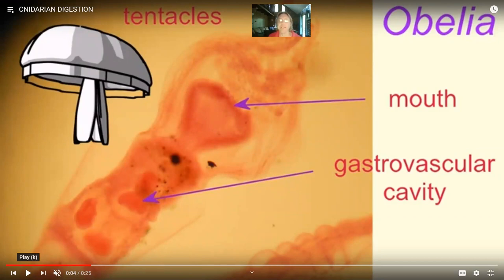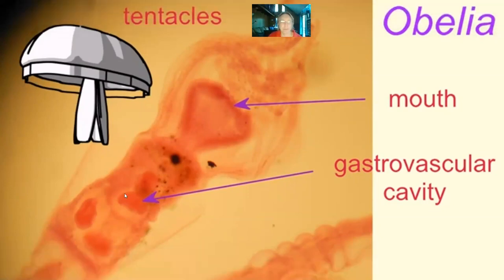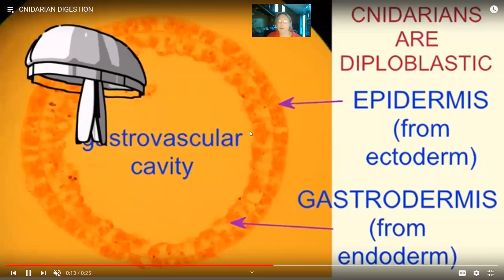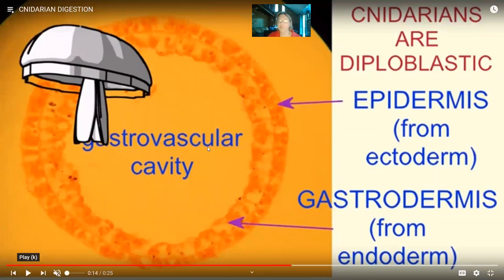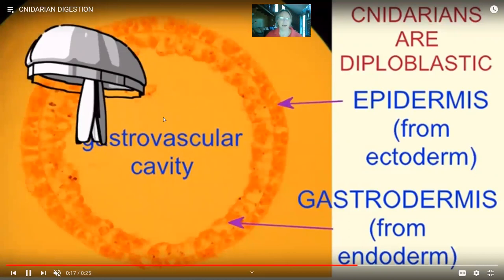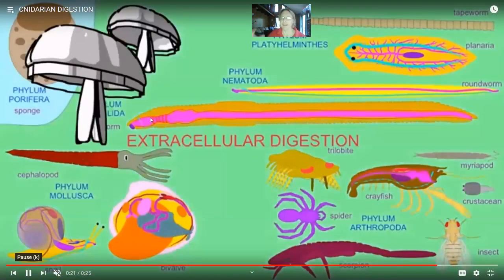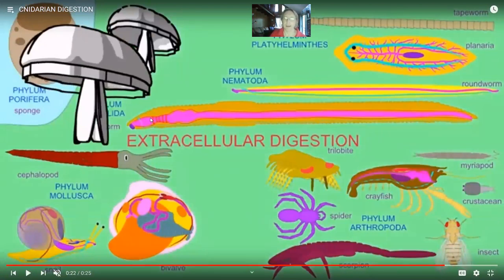Cnidarians feed differently from sponges. Sponges are limited in what they can eat because they ingest food through phagocytosis — they can't eat anything bigger than the ingesting cell. Whereas in cnidarians and metazoans in general, these animals evolved a gastrovascular cavity. Food, such as a small fish, can be brought into this space and digested outside the cells. All other animals can perform extracellular digestion by bringing food into a gastrovascular cavity.